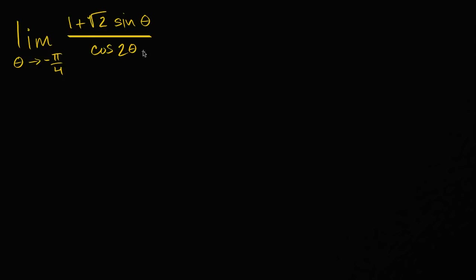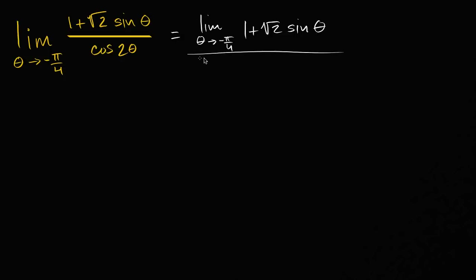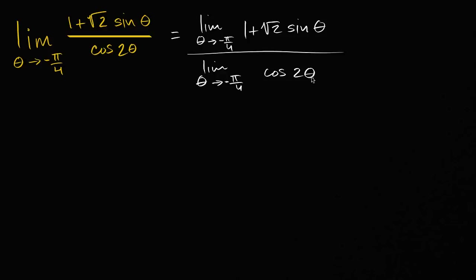One take on it is, well, let's just say that this is going to be the same thing as the limit as theta approaches negative pi over four of one plus the square root of two sine theta, over the limit as theta approaches negative pi over four of cosine of two theta. Both of these expressions — if we were to graph them — would give continuous functions, especially at theta equal to negative pi over four, so we could just substitute in.